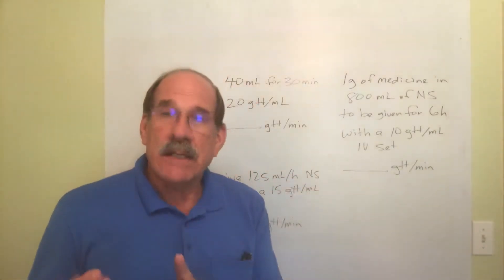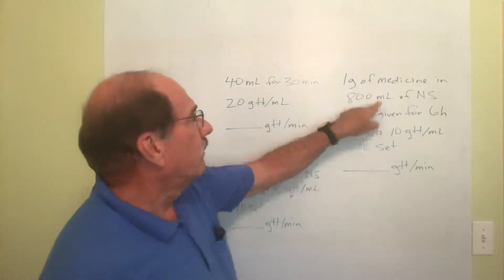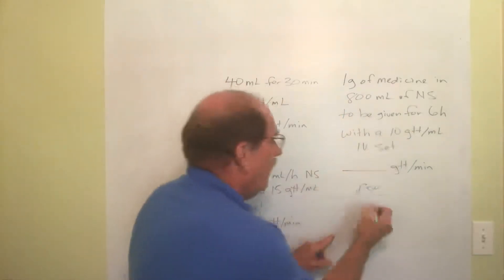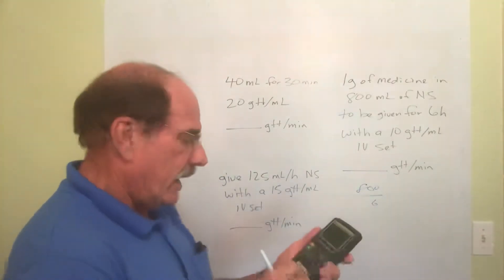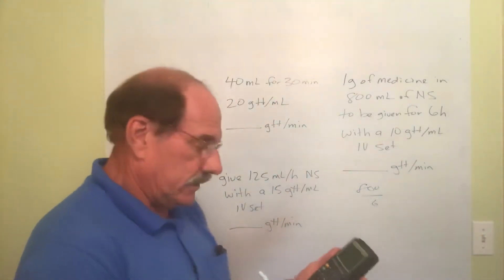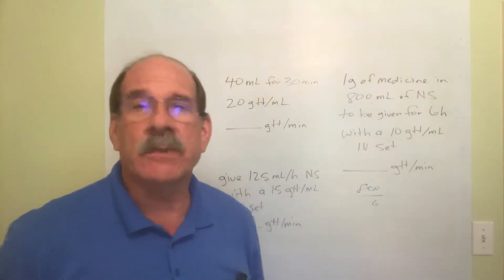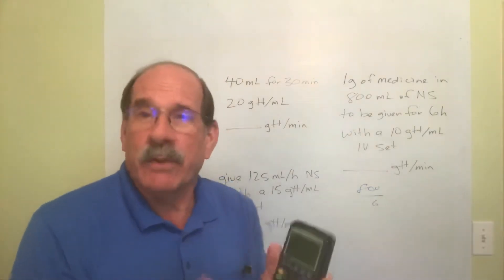V is the milliliters per hour. So I need to know how many milliliters per hour. Milliliters is 800 over how many hours? Six hours. 800 divided by six is 133.333. So 133.3 milliliters per hour.